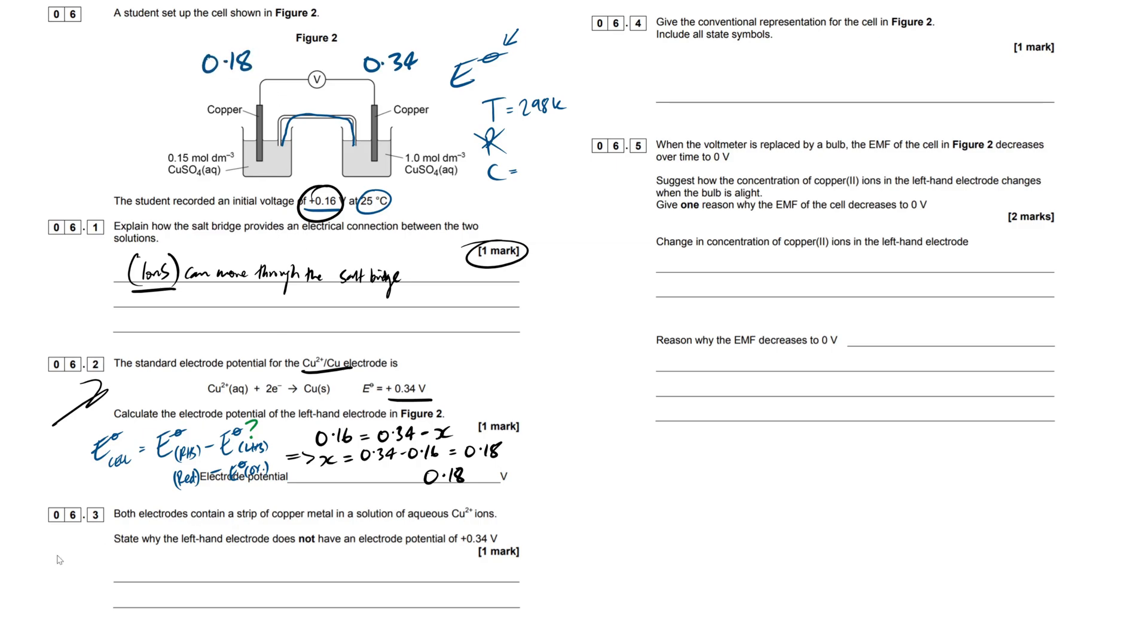So then this cell here is 0.34, and this cell is 0.18. So in the next question then, why are these not the same? Because you think by looking at it, you think, okay, they're the same copper electrodes. They've got the same copper solutions. Why aren't they the same potential difference? Now, both electrodes contain a strip of copper metal in a solution of aqueous copper 2 plus ions. State why the left-hand electrode does not have an electrode potential of 0.34. The reason for this being is focus on what is different between these two. It's the concentration.